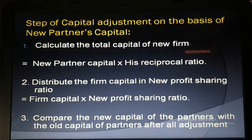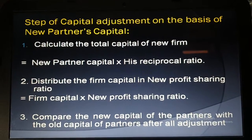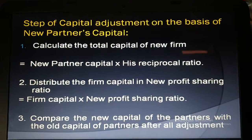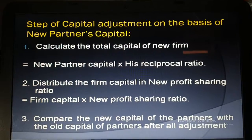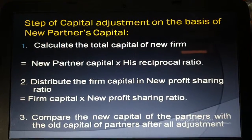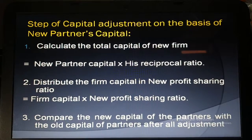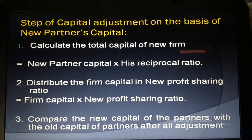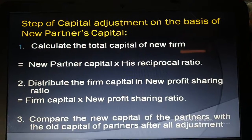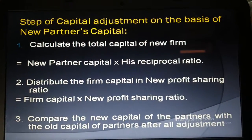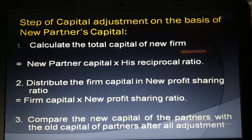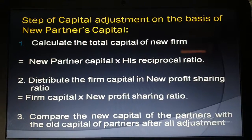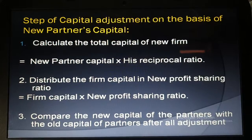Second step: distribute the firm's capital into the new profit sharing ratio. The formula is firm capital multiplied by the new profit sharing ratio. Whatever capital comes from step two will be the new capital of the partners. Third step: compare the new capital of each partner with their old capital after all adjustments. The difference — whether surplus or deficiency — may be brought in or withdrawn by the partners accordingly.